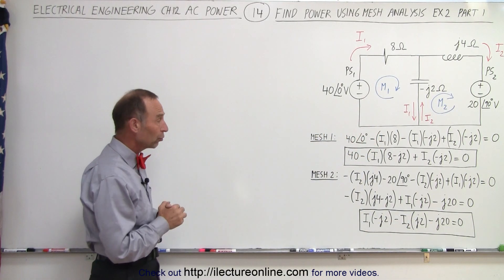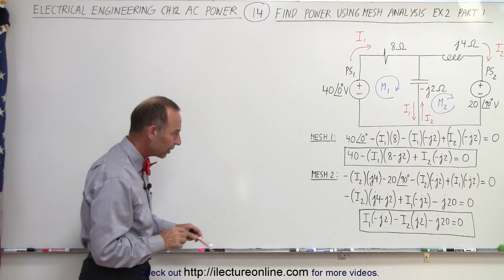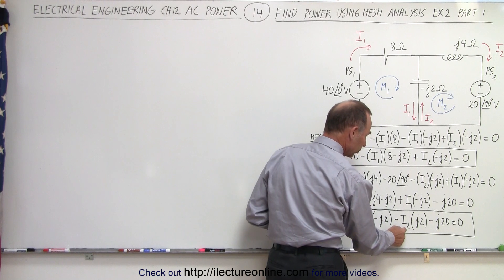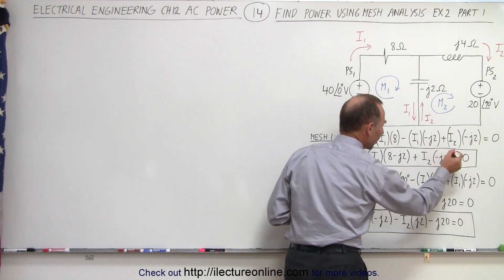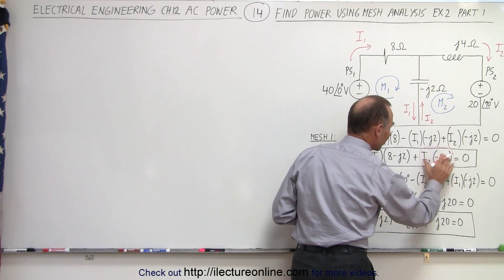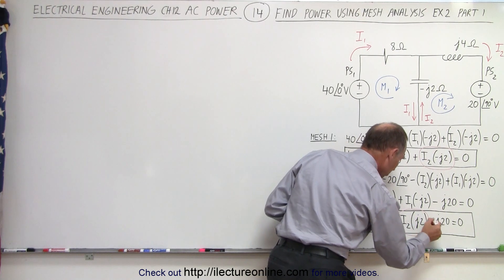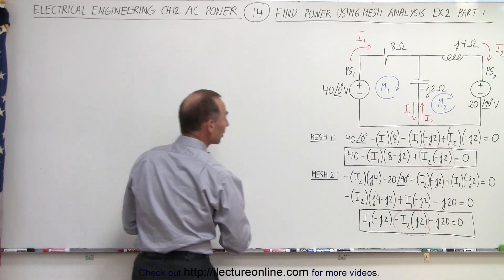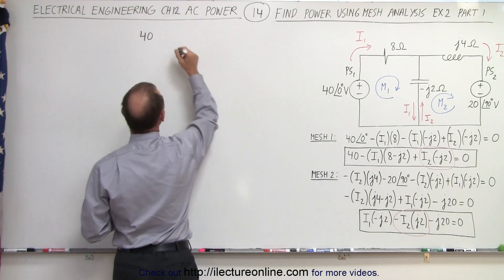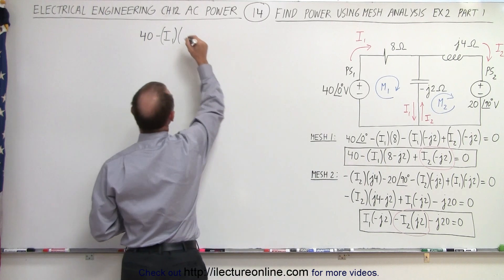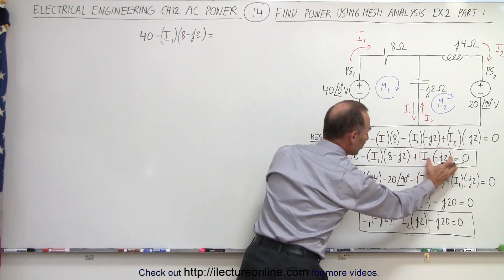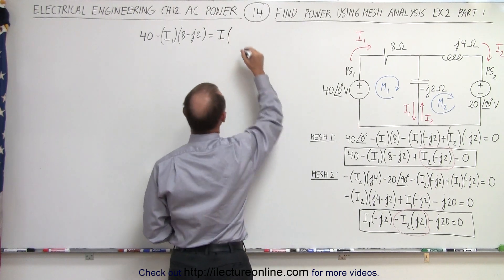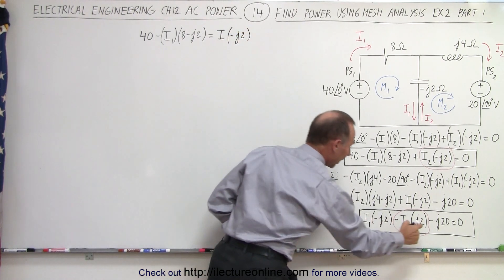Now we have two equations and two unknowns — we have to solve for both I1 and I2. If we look carefully, in this equation we have minus J2 times I2, and in this equation we also have minus J2 times I2. If we move those terms to the right side, then what's remaining should equal what's remaining in the other equation. By doing that, we can say that 40 minus I1 multiplied times 8 minus J2 must equal I1 times minus J2 combined with minus J2.